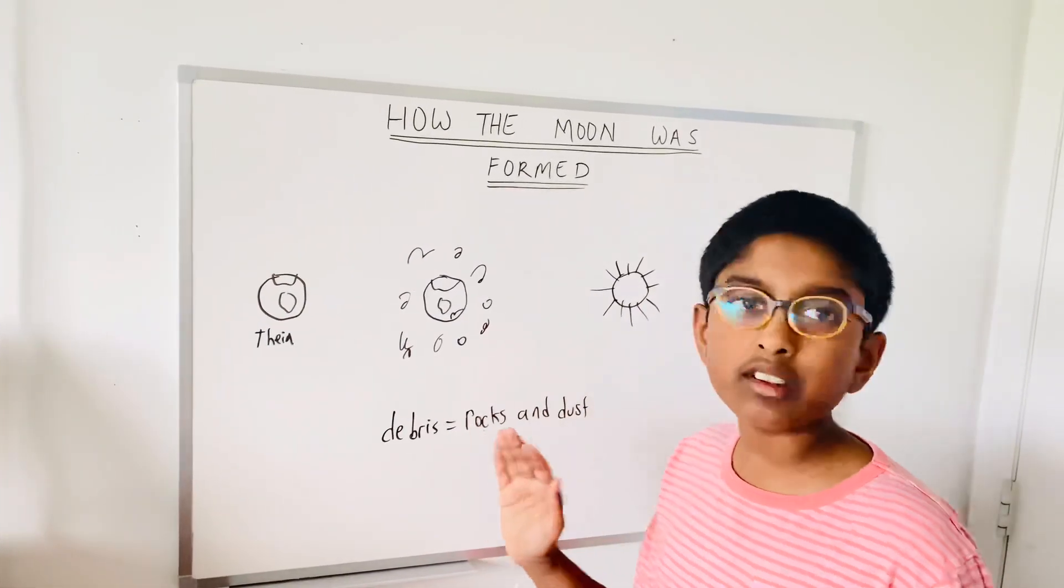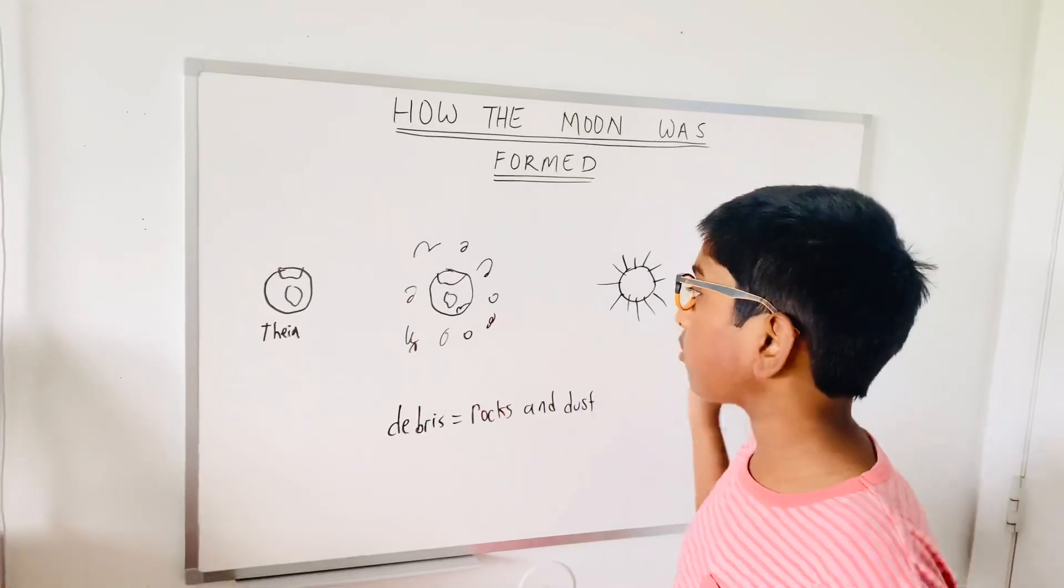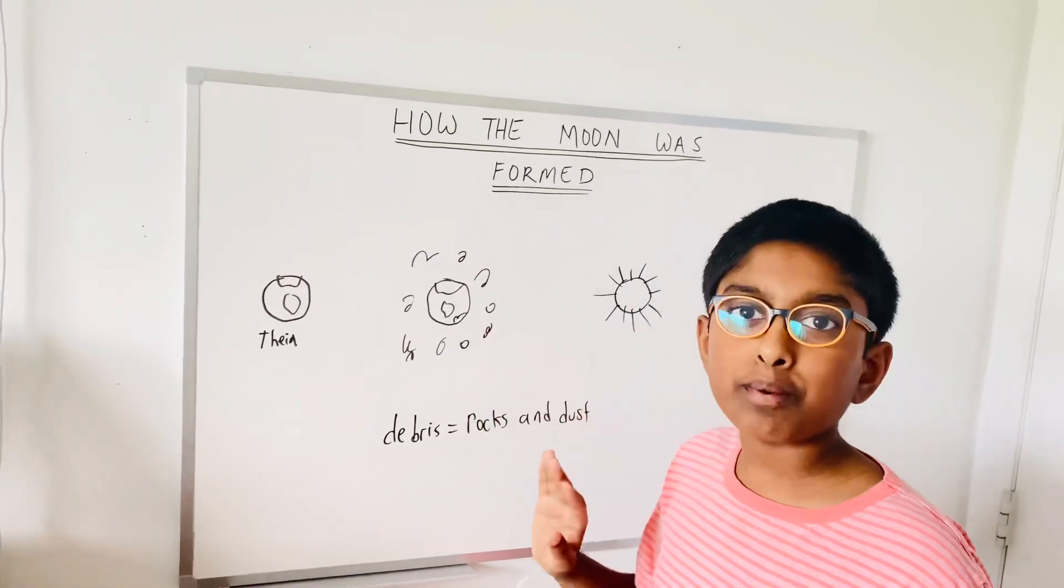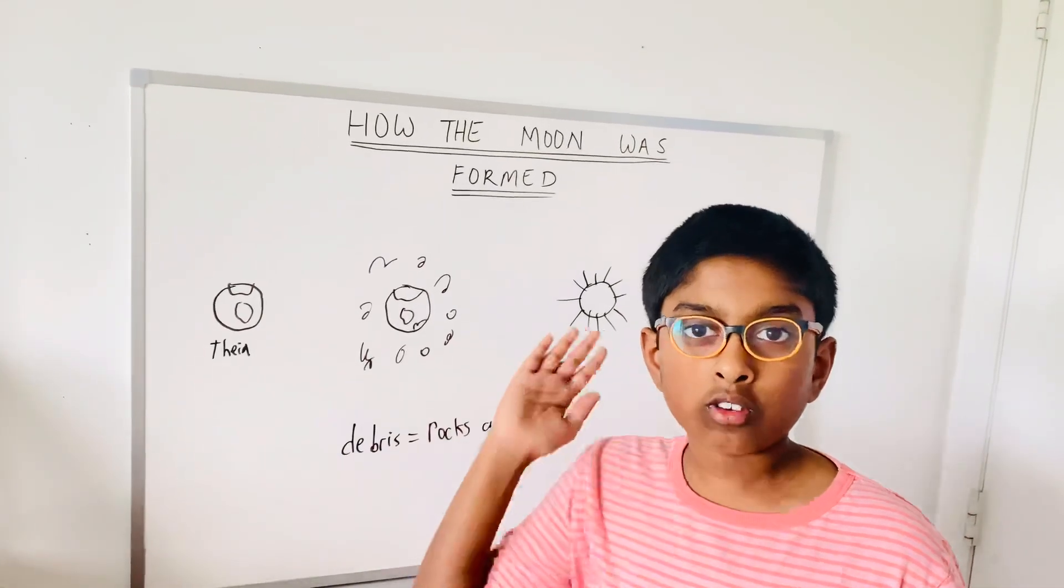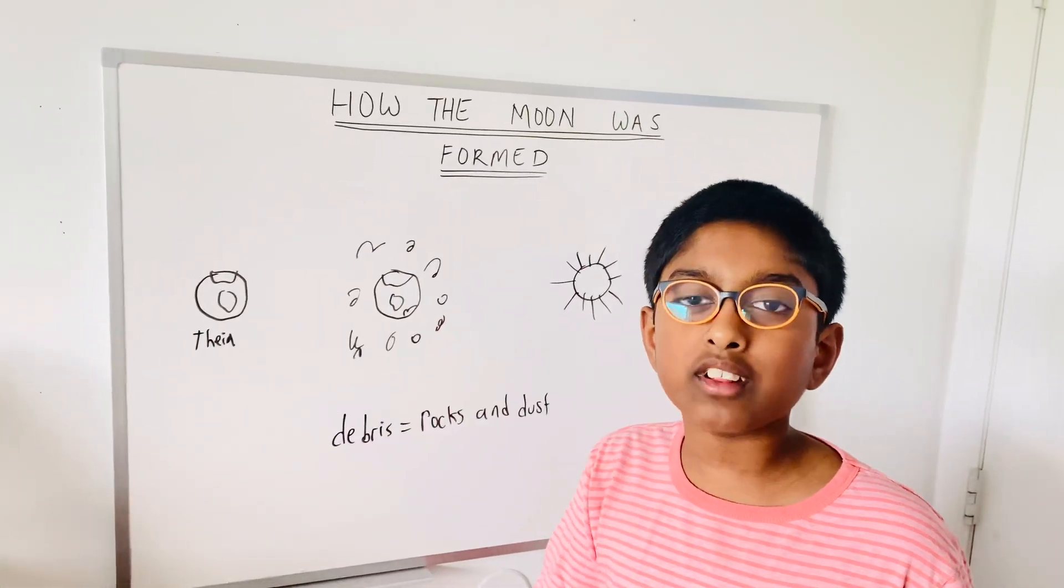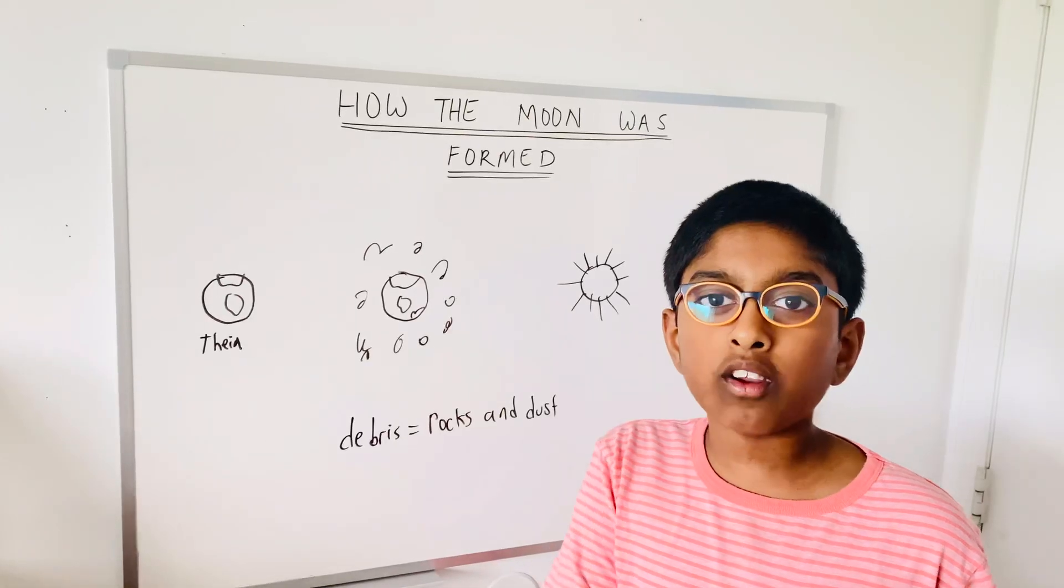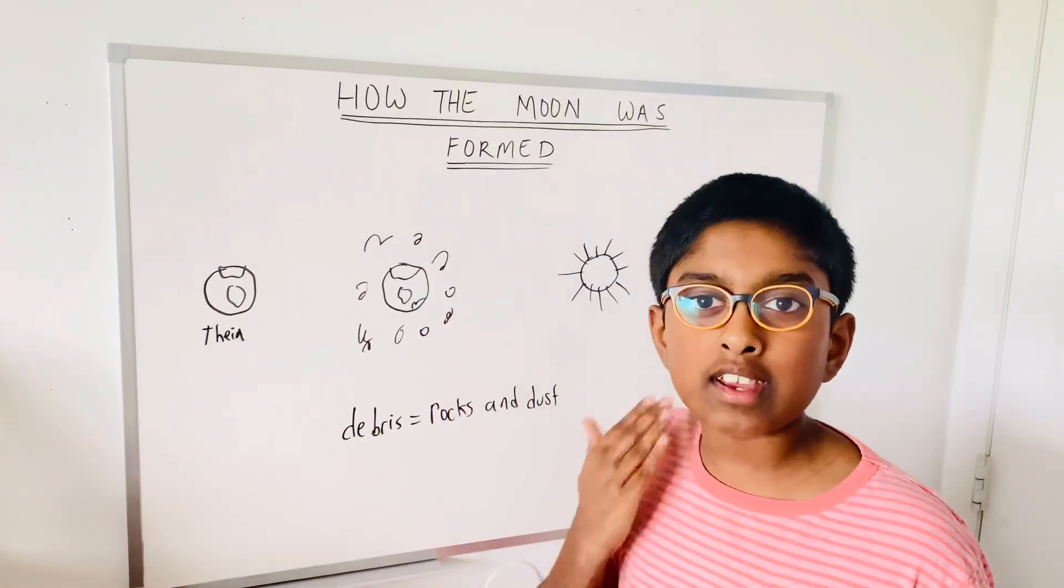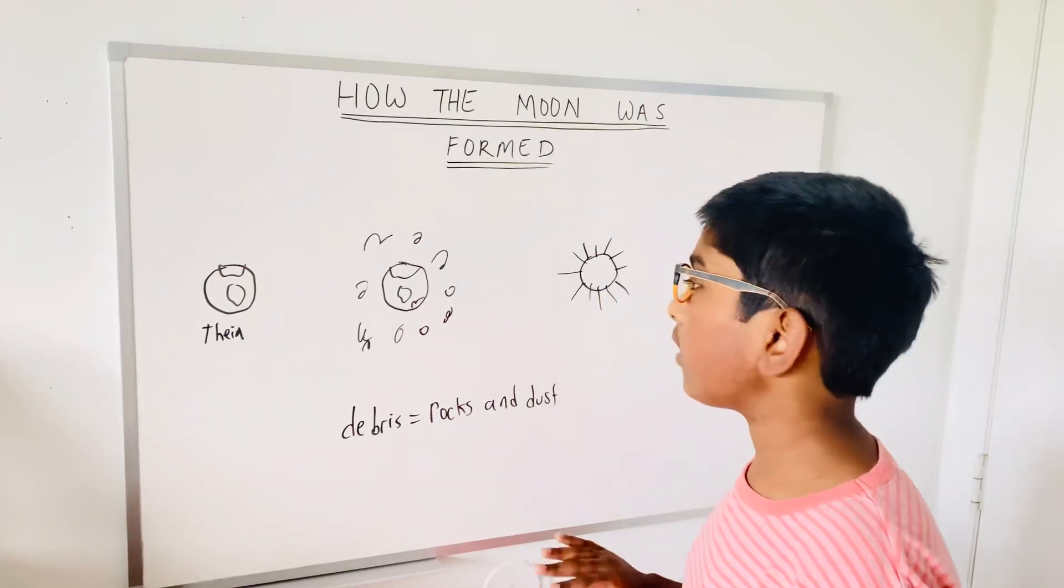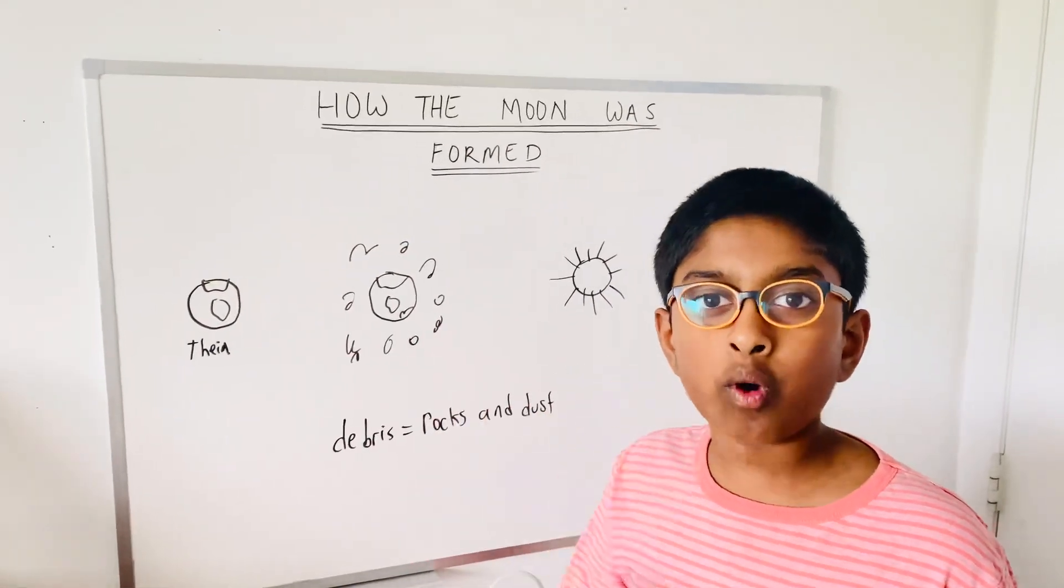Asteroids started hitting the moon. And asteroids started heading to Earth. But then, the moon started protecting them. And most of the asteroids that were harmful collided into the moon. And then, there were a lot of craters. That's why there were a lot of craters on the moon. That formed all the land as we see right now on the moon. And that's how the moon was formed.